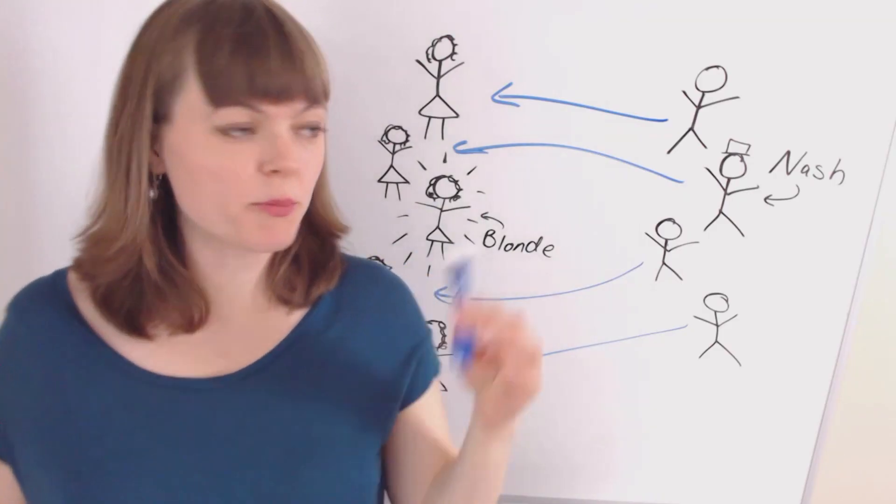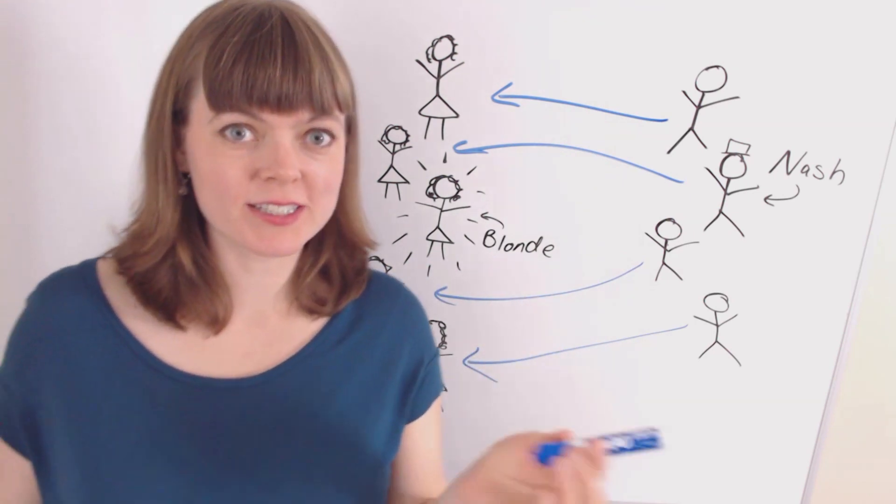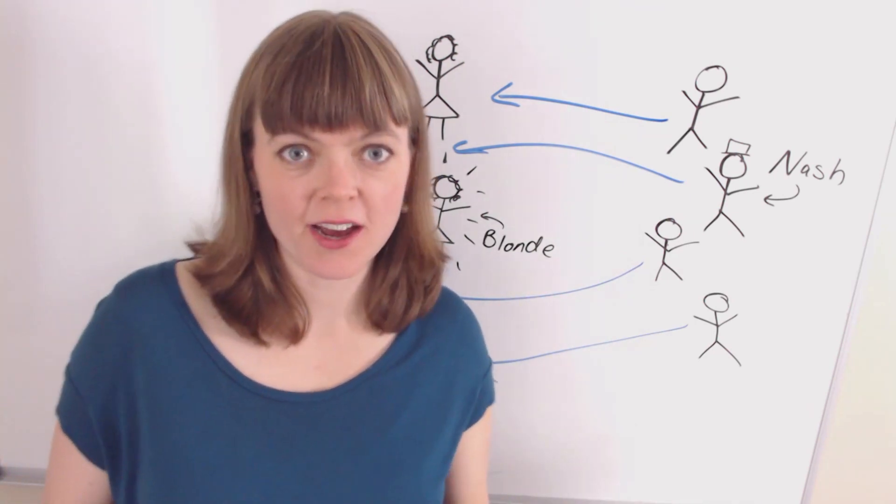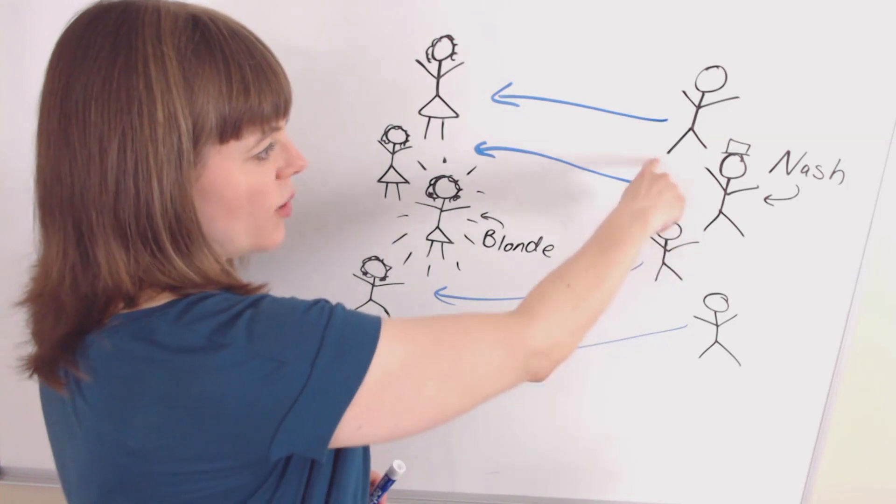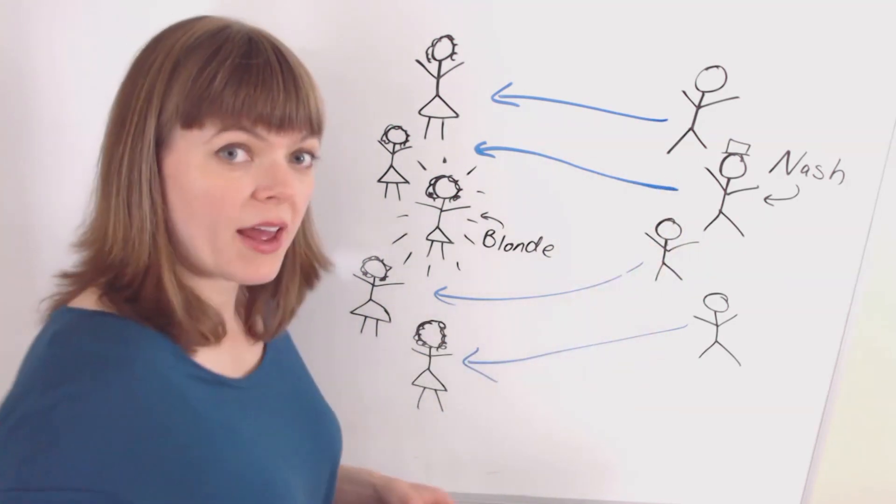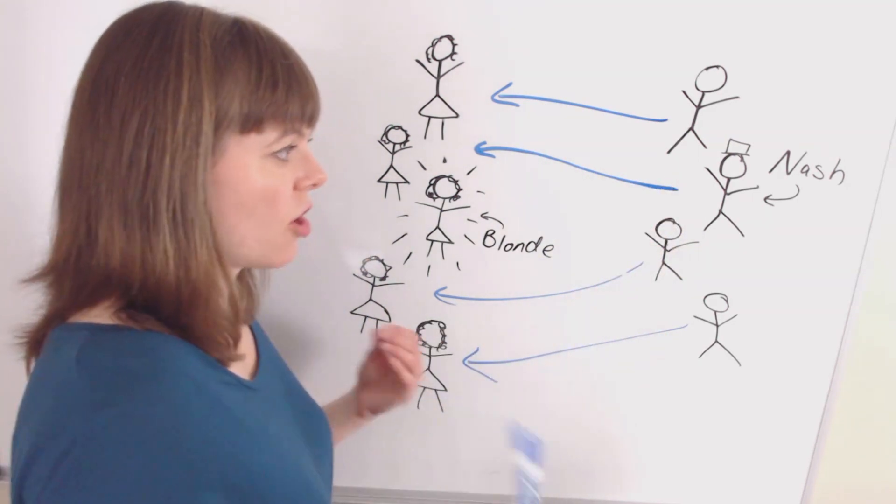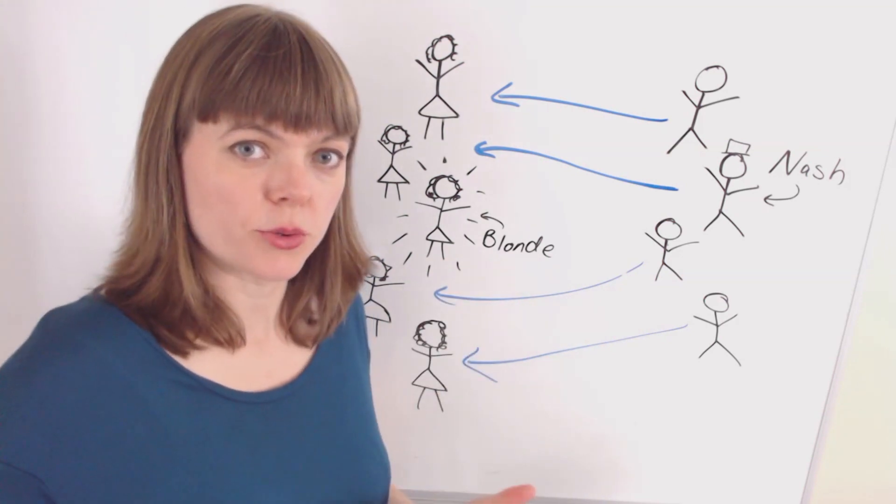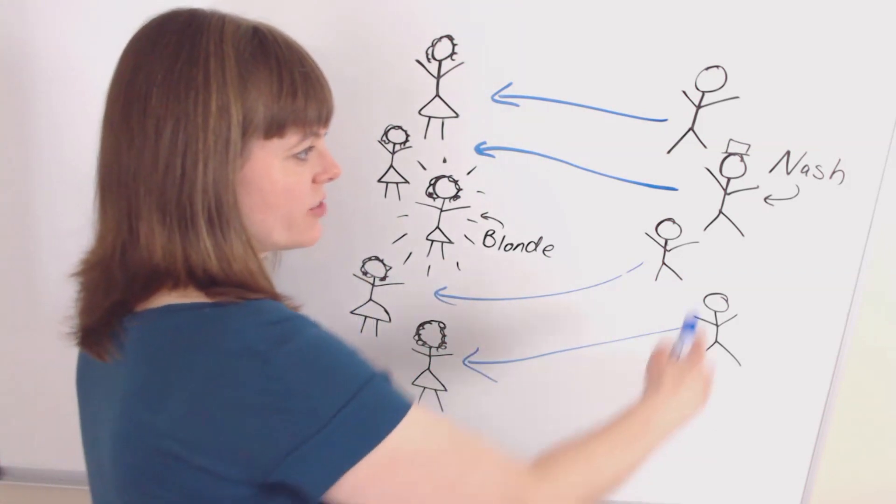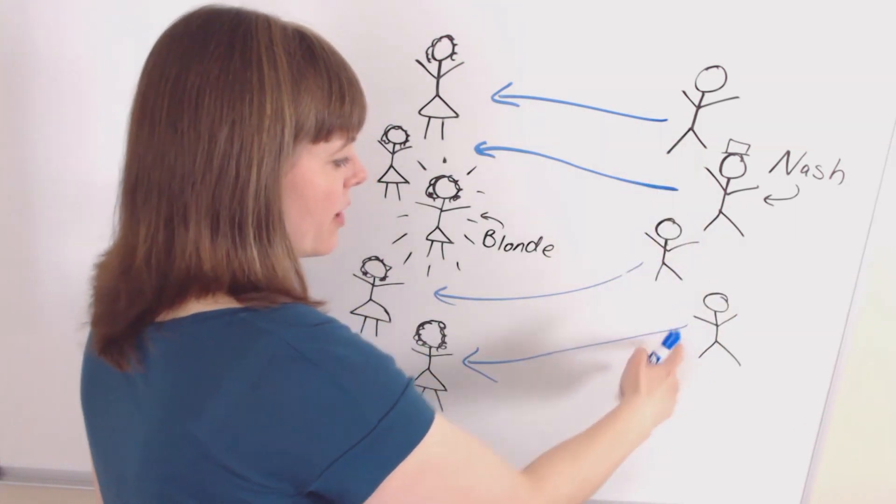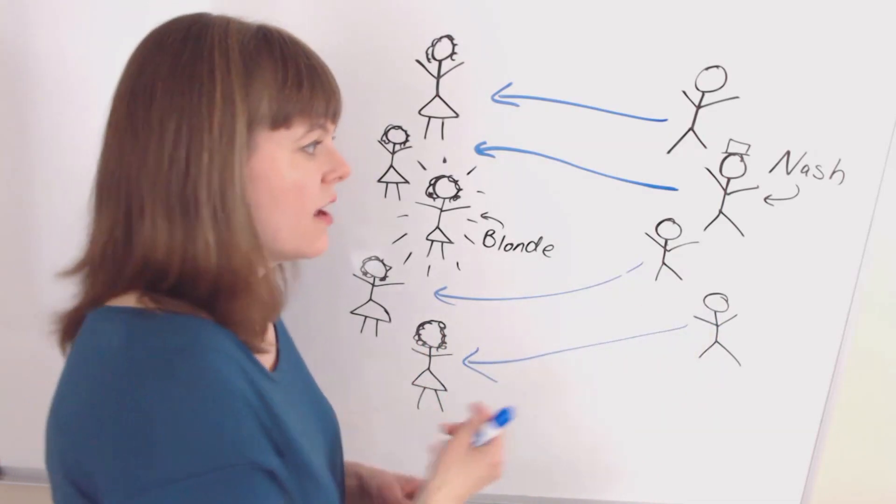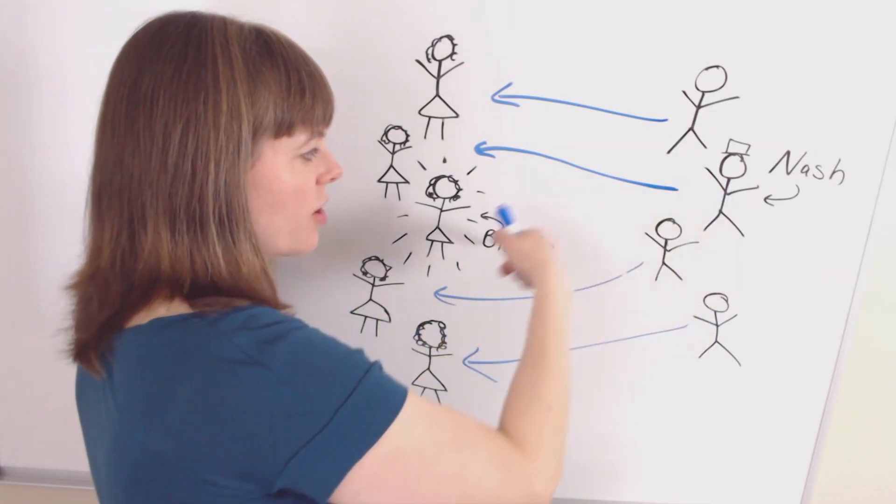Now let's test our proposed equilibrium from the movie to see if it actually meets those criteria. The question is, do any of these guys have a regret on their choice based on what the other three guys chose? And yes, of course, if John Nash sees that the other three guys all went for the brunettes, then John Nash is going to go for the blonde.